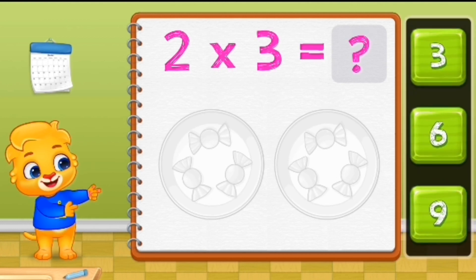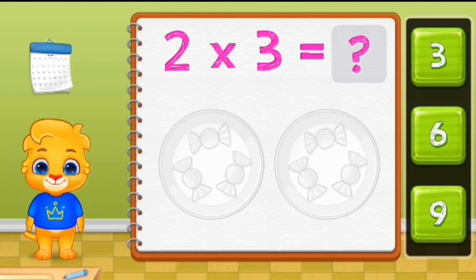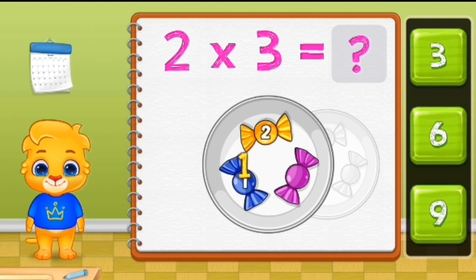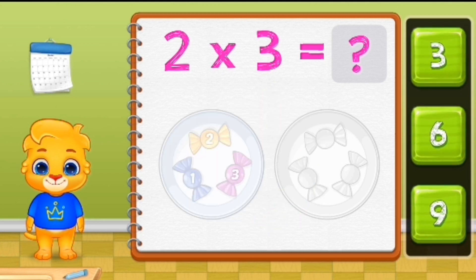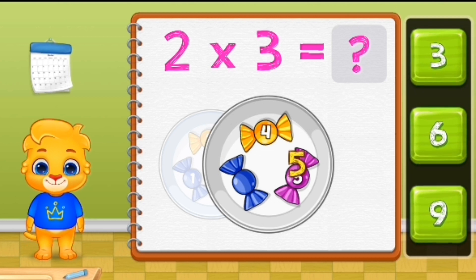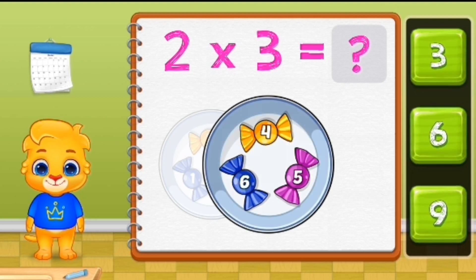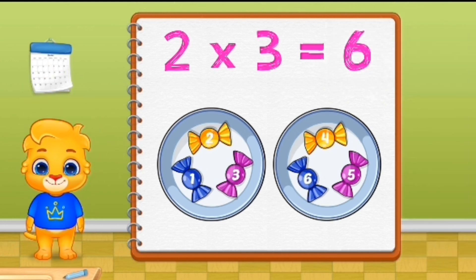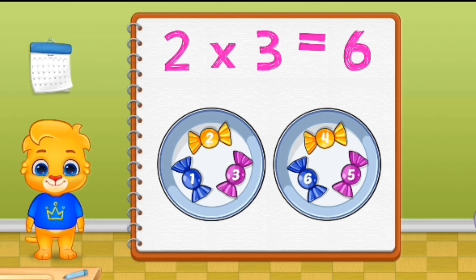Let's learn to multiply using groups. One, two, three, five, six. When you multiply, you are adding numbers in groups. Six, two times three equals six.